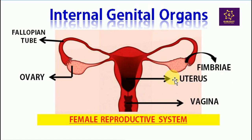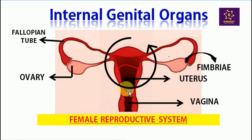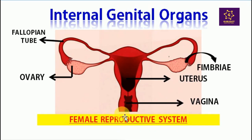The ovum requires sweeping activity because it is a non-motile cell — it cannot move by itself, so something must push it towards the fallopian tube. Then comes the uterus, where the baby develops. Then comes the vagina — this is where the male gametes, that is sperm, enter the female body, and it is also the site through which the baby is delivered out of the female reproductive system.